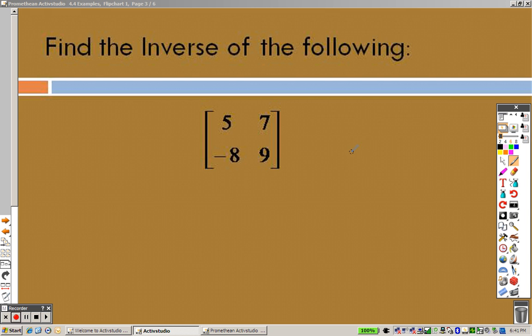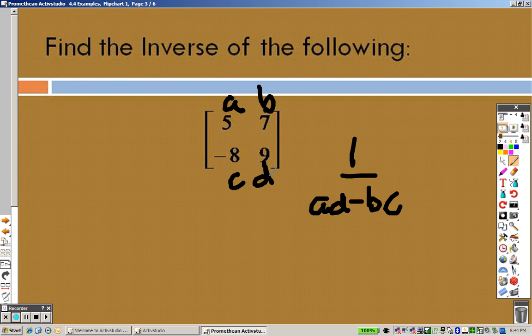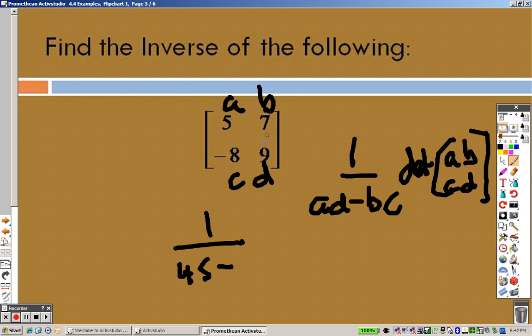The best way to do inverses, let's be honest, you can try to remember the formula. It's the determinant, and then you do 1 over AD minus BC, and this is A, B, C, and D, over the determinant of A, B, C, D. All right, yeah, not that bad, not that hard to remember.